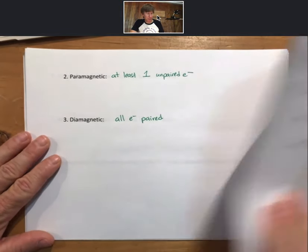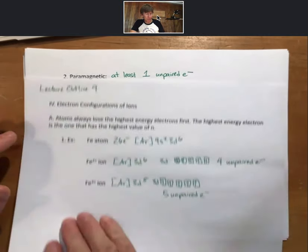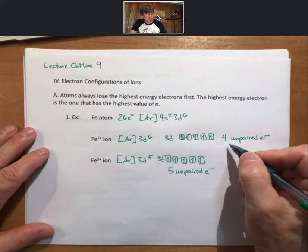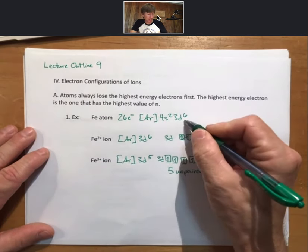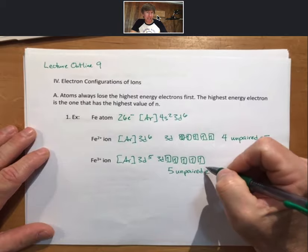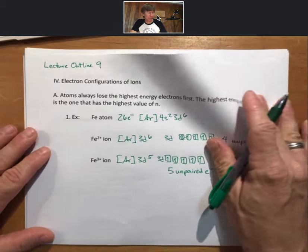And so, referring back to the previous examples, both iron 2 plus, actually iron, iron 2 plus, and iron 3 plus are all paramagnetic species.